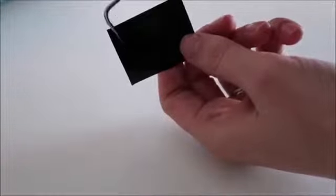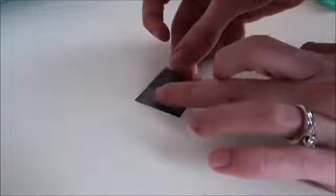Normally you would weed out the excess vinyl before putting on the transfer paper, but this time I'm going to place the clear transfer paper right on top of the whole piece of vinyl. I'm using Oracle 651 vinyl.